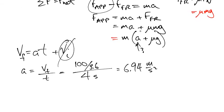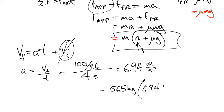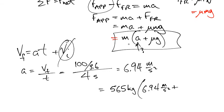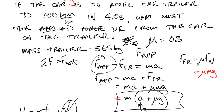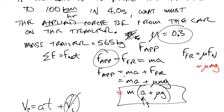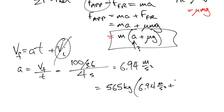I simply take this equation here and I put in my values, 565 kilos for the mass times an acceleration of 6.94 meters per second squared. Plus, what was my mu? Right there,